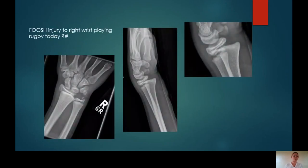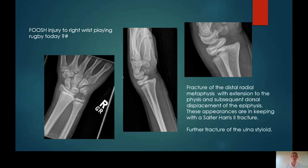Case 4: FOOSH injury to right wrist playing rugby, query fracture. There's a fracture of the distal radial metaphysis that extends into the physis — in keeping with a Salter-Harris type 2 fracture. On the zoomed lateral projection, there is disruption of the distal radial dorsal metaphysis, and tiny little fracture fragments adjacent to that metaphyseal surface. There is also a further fracture of the ulnar styloid.